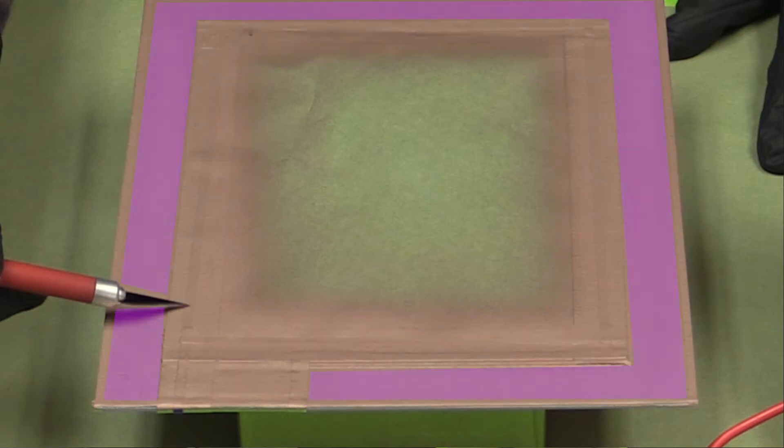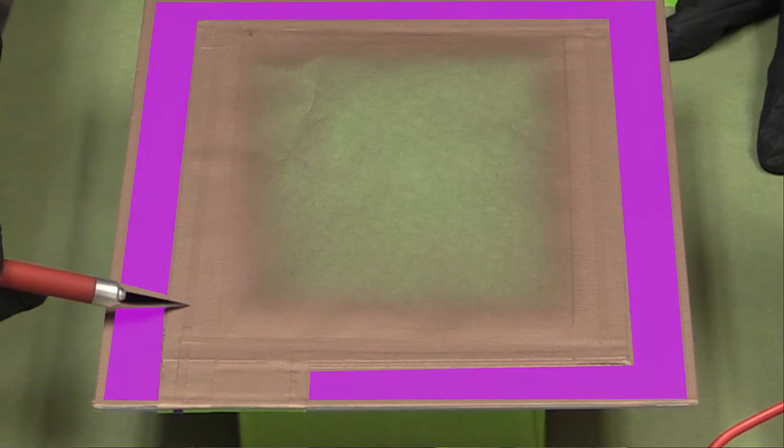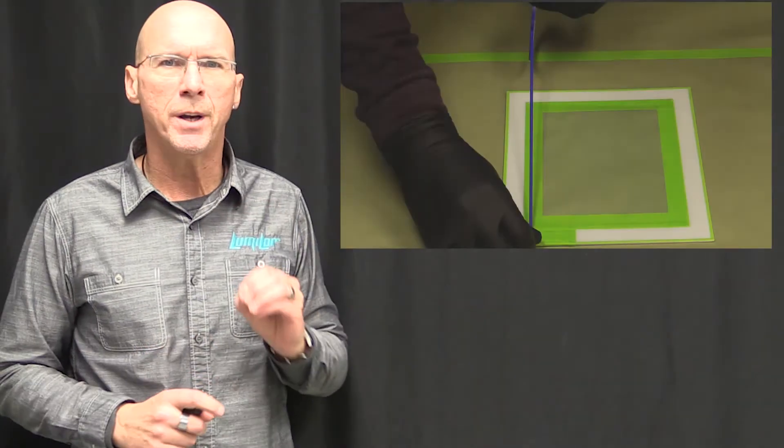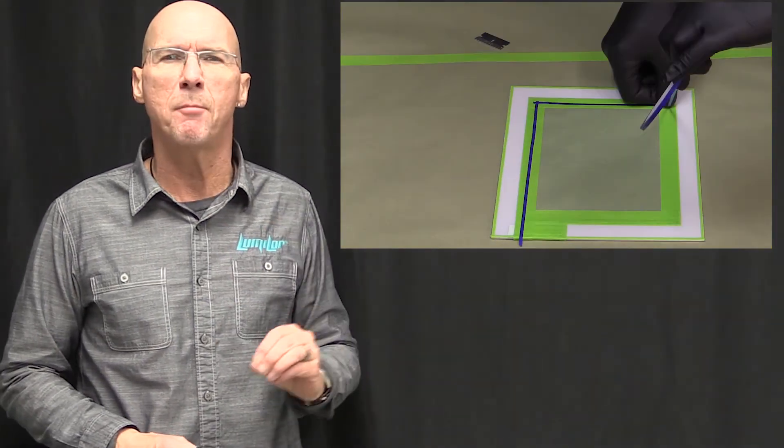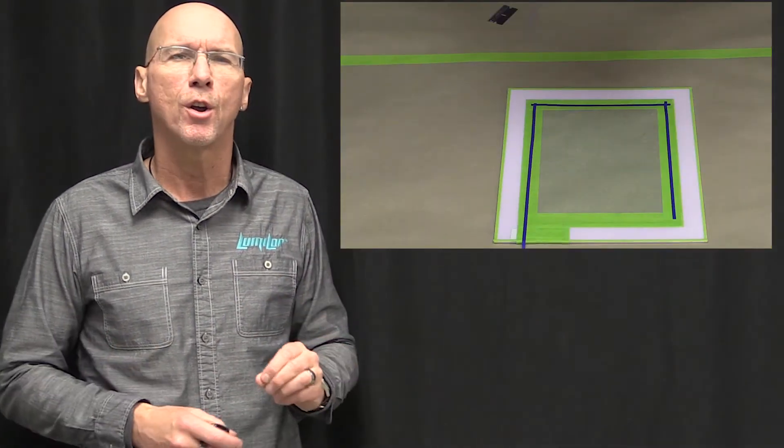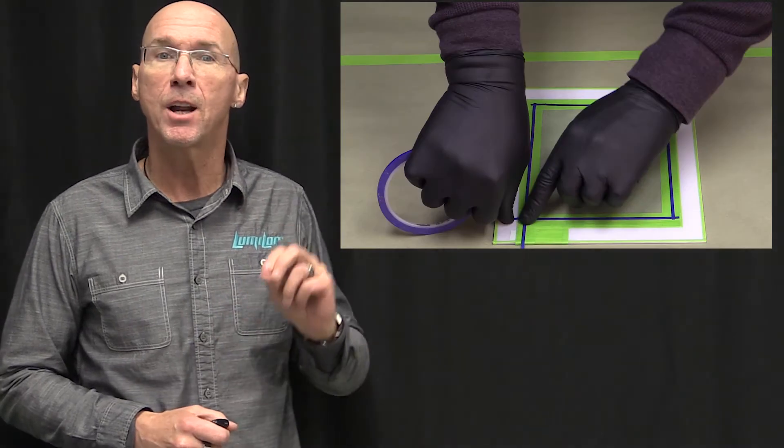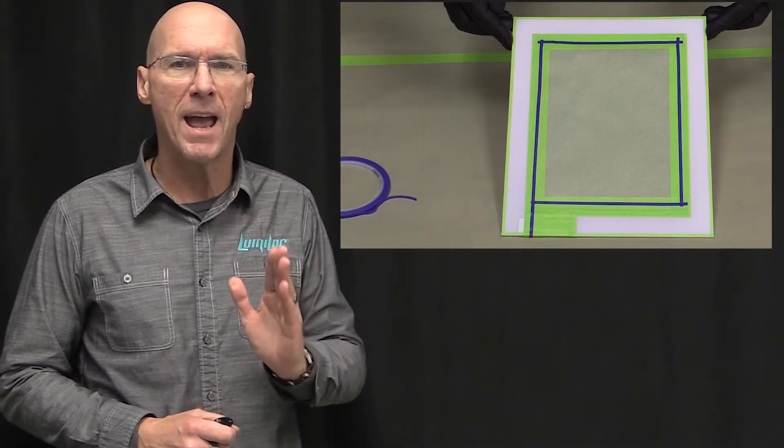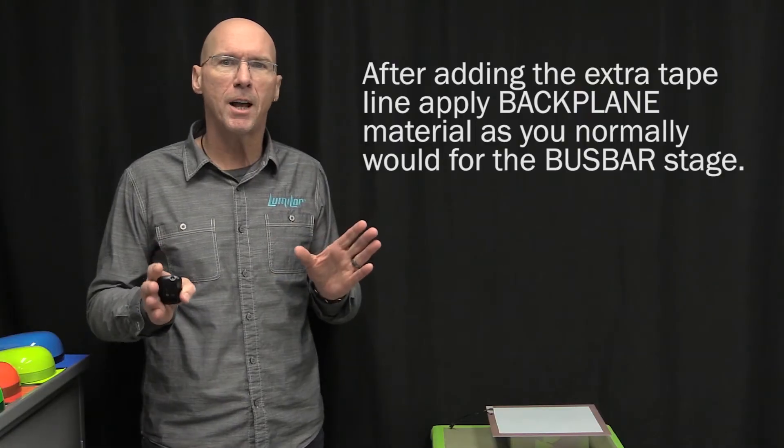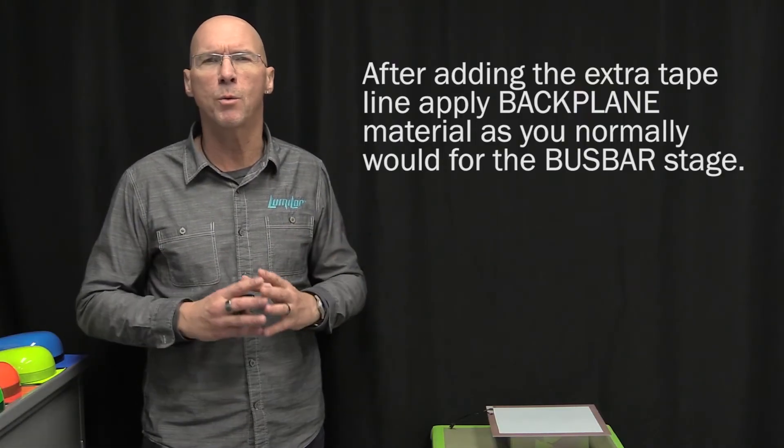not just the material in the actual bus bar area. To get a more accurate reading of your bus bar, what we suggest is that after you have masked off for the bus bar, run a second tape line right along the edge of the bus bar area on top of your masked area. Then you can apply your backplane material as you normally would.